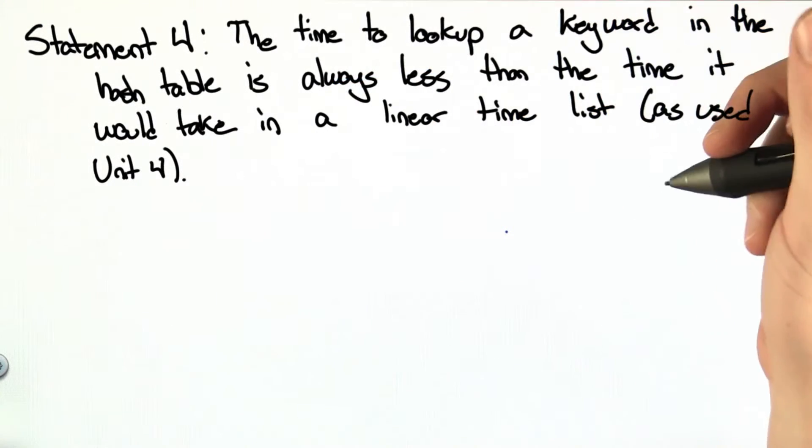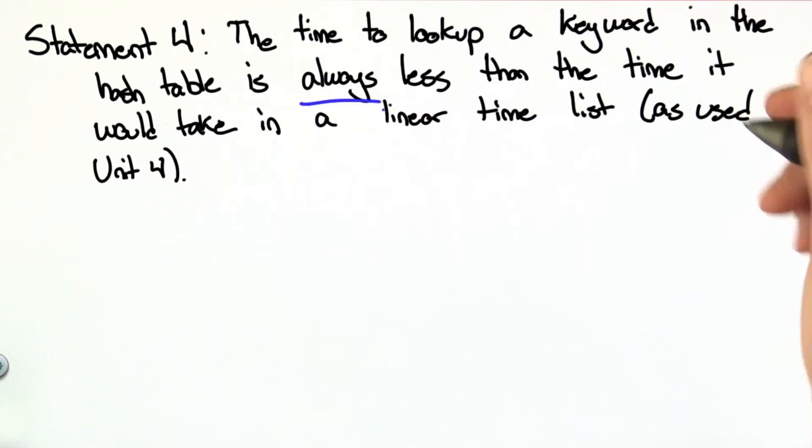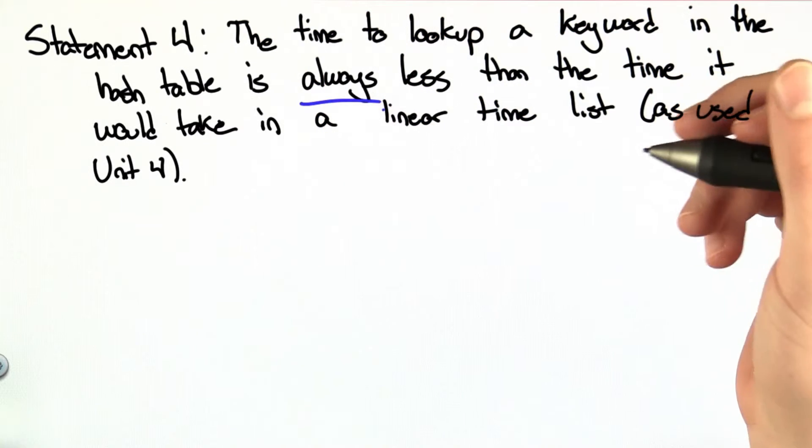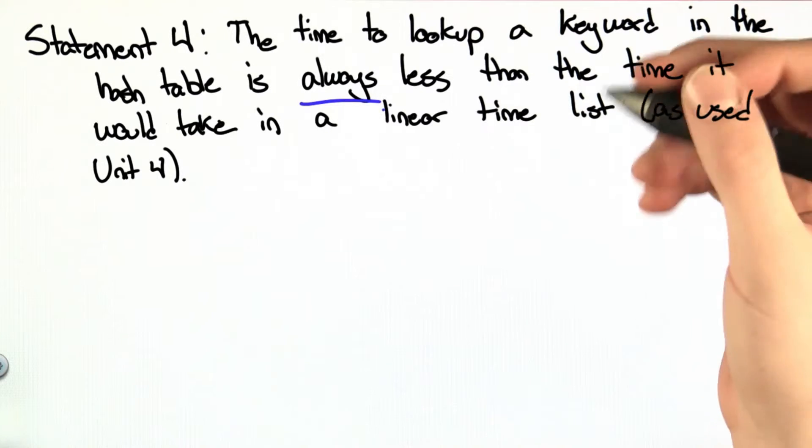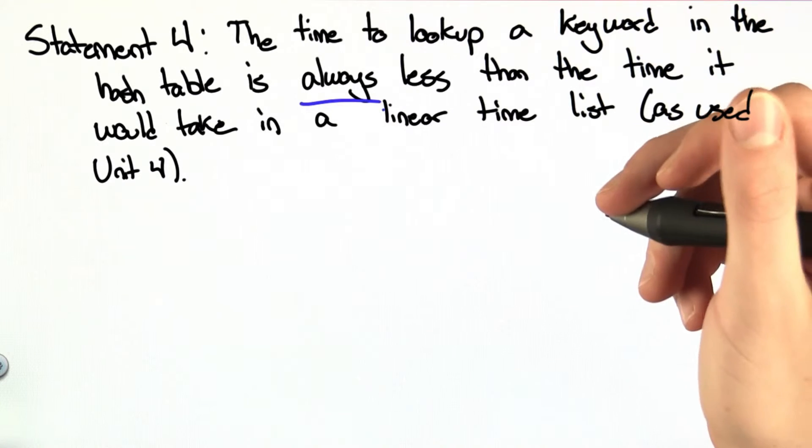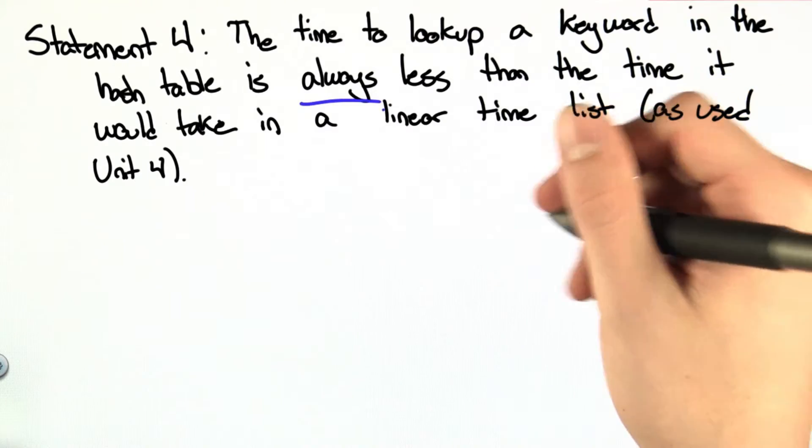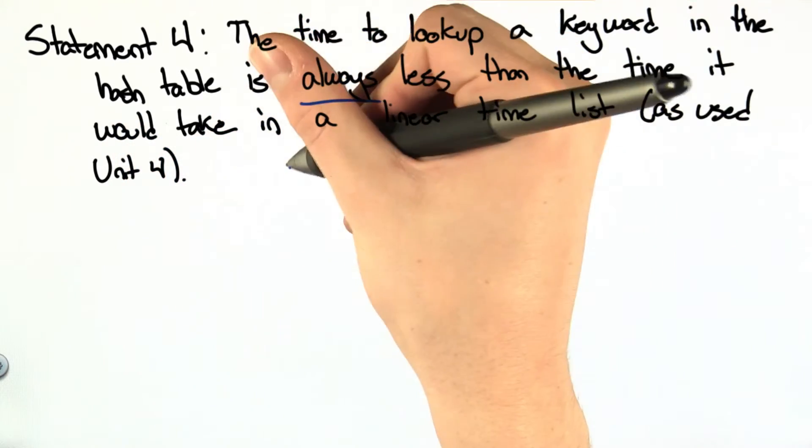Statement 4 says the time to lookup a keyword in the hash table is always less than the time it would take in a linear time list as used in Unit 4. So the question is, is the lookup time always less than the lists that we've been using previously? And as you might suspect, the statement is false.